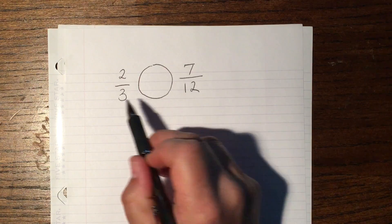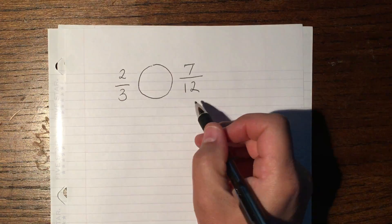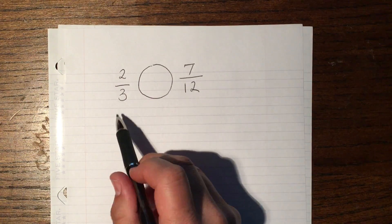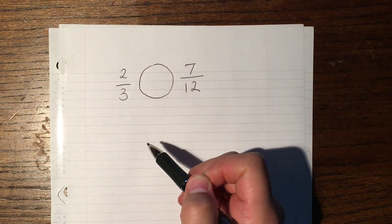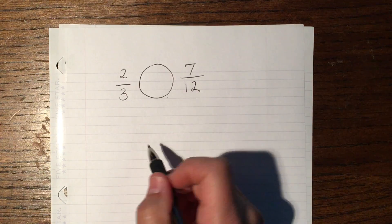Here we have two fractions that have different denominators. So what I'm going to do is find a common denominator for both of them and then rename them into equivalent fractions that have the same denominator before I compare them.